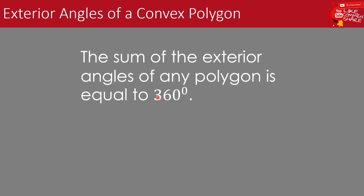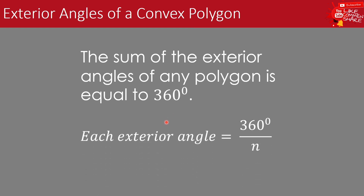To find the sum of the exterior angles of any polygon, it is equal to 360 degrees — whether it is a triangle, quadrilateral, pentagon, decagon, dodecagon, 21-gon, 72-gon, or 100-gon. To find the measure of each exterior angle of a regular convex polygon, the formula is: each exterior angle equals 360 degrees divided by n, where n is the number of sides.